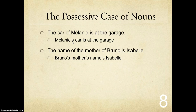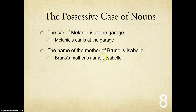The name of the mother of Bruno is Isabel becomes Bruno's mother's name is Isabel. Here Bruno's is possessive, mother's is possessive, and name is just the noun. Note that the apostrophe S can also mean is — so name is Isabel.